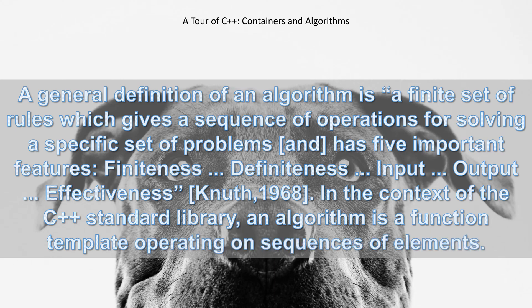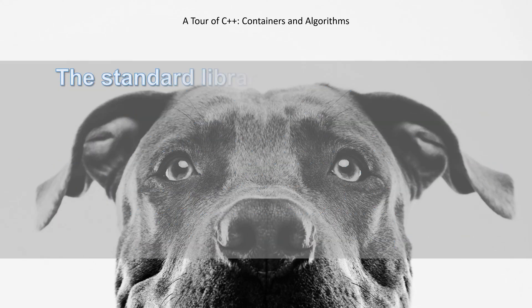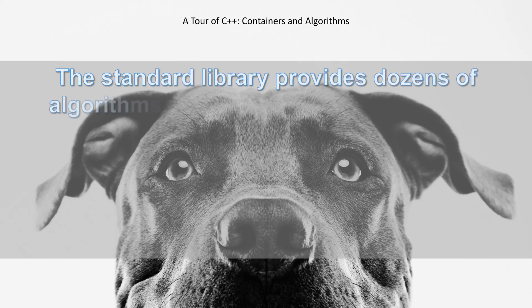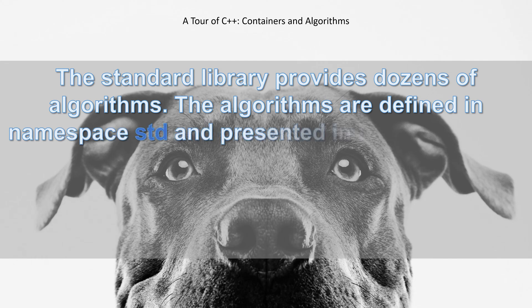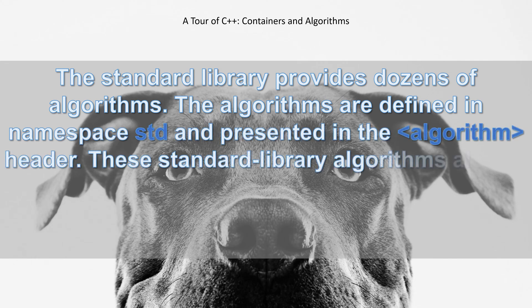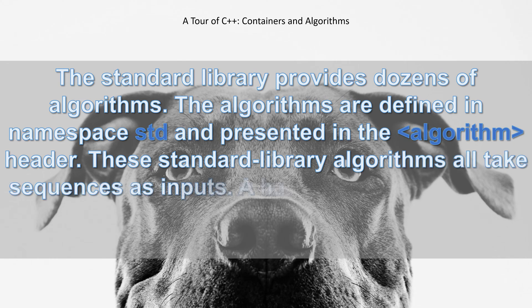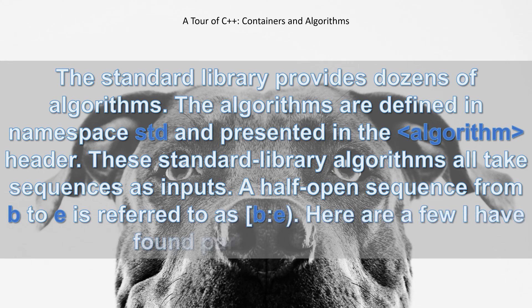In the context of the C++ standard library, an algorithm is a function template operating on sequences of elements. The standard library provides dozens of algorithms defined in namespace std and presented in the algorithm header. These standard library algorithms all take sequences as inputs. A half-open sequence from b to e is referred to as [b,e).